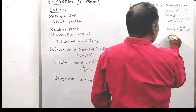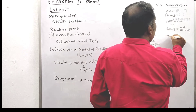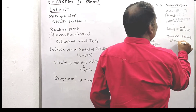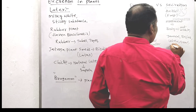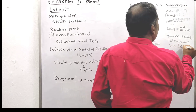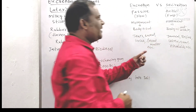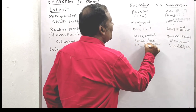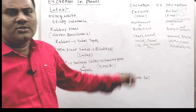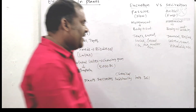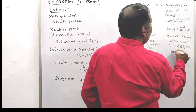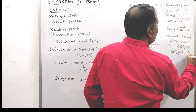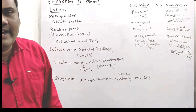Whereas the secretory products are tannins, resins, latex, gums, alkaloids, and so on. Secretory products also include gases like carbon dioxide and excess water. In human beings, secretory products are enzymes and hormones.